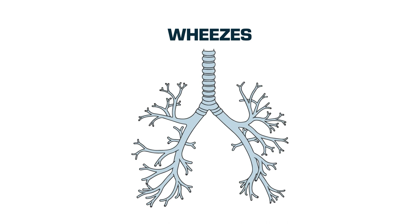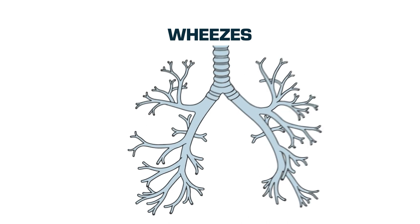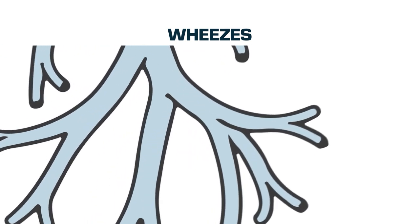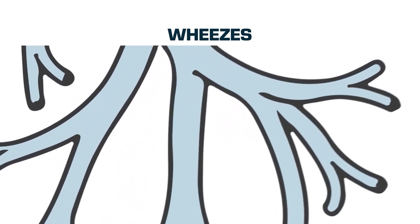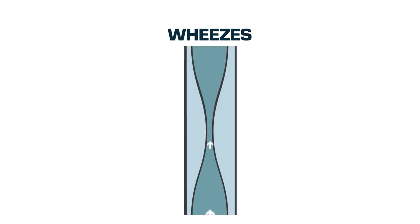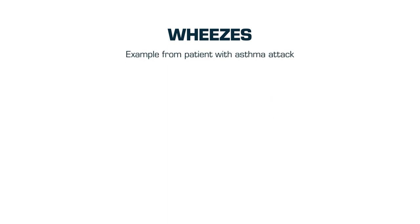Wheezes are continuous and of longer duration than crackles. They are found mainly in expiration, although they can be inspiratory, which would indicate greater severity. Wheezes are caused by vibrations in the narrowed bronchial wall due to bronchospasm or mucosal inflammation. They can be found during an asthma attack.